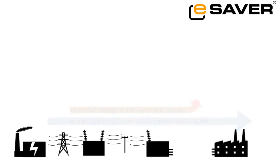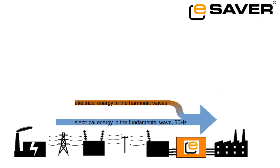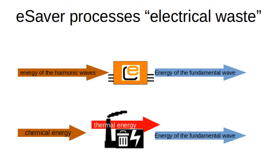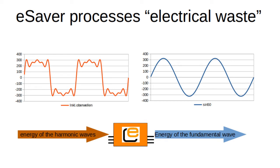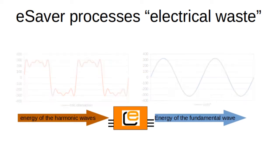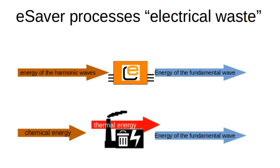That's exactly what the eSaver does. It converts the unusable energy from the harmonics into usable energy. One can think of the eSaver as a kind of waste-to-energy power plant. A waste-to-energy power plant uses the chemical energy contained in the waste and turns it into electrical energy. The eSaver uses the energy contained in the harmonic waves and turns it into energy of the fundamental wave. In both cases, an energy form that needs to be removed is converted into another, usable form of energy.